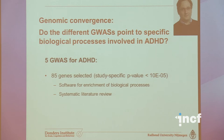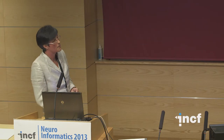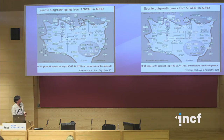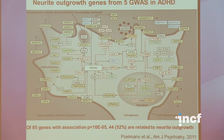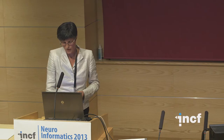He selected 85 genes from the genome-wide association studies and found that about half of them could be involved in a process called neurite outgrowth. He put this into a network — placing all the genes and proteins involved in neurite outgrowth into a growth cone of a developing neuron — with different processes including sensing the environment, changing the cytoskeleton, changing the extracellular matrix, and changing transcription and translation to guide neurite growth in a certain direction.